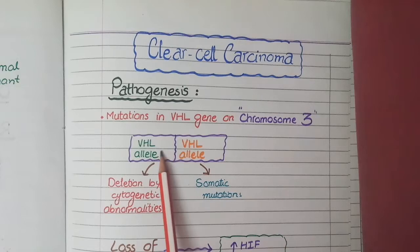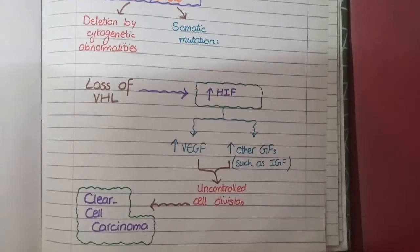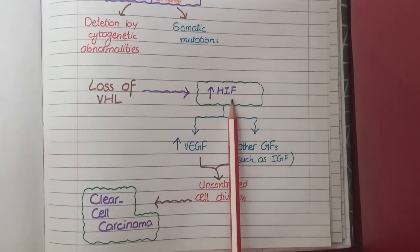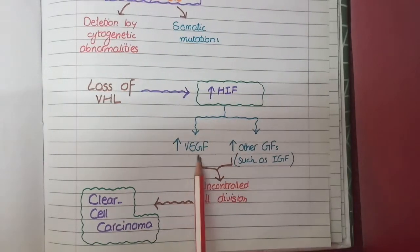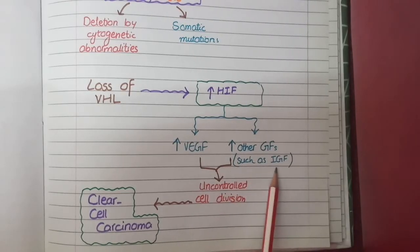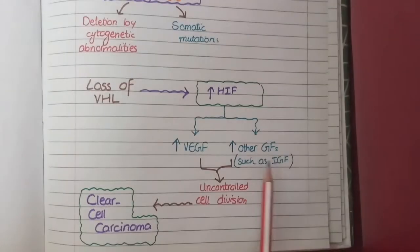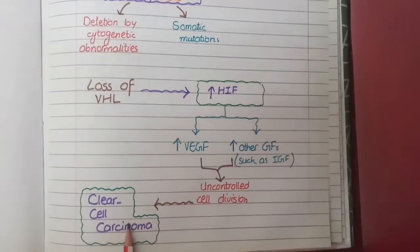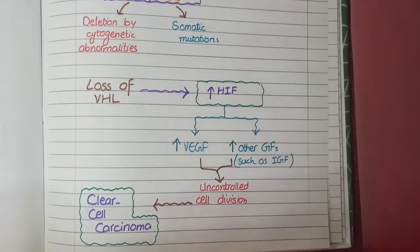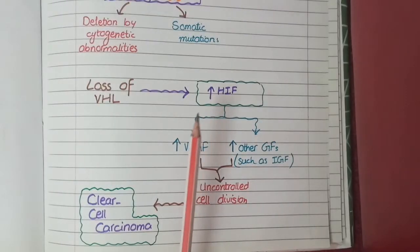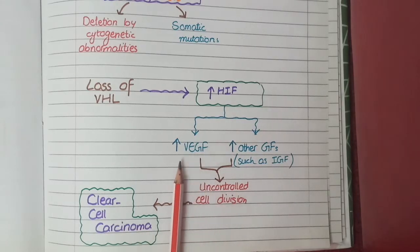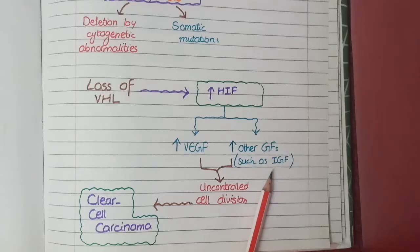When both copies of VHL alleles are inactivated, this loss of VHL results in increased production of HIF, known as hypoxia inducible factor. This HIF acts as a transcription factor and increases the transcription of vascular endothelial growth factor as well as other growth factors such as insulin-like growth factor 1. These growth factors stimulate uncontrolled cell division of renal tubular cells, resulting in formation of clear cell carcinomas.